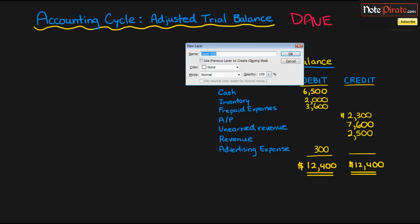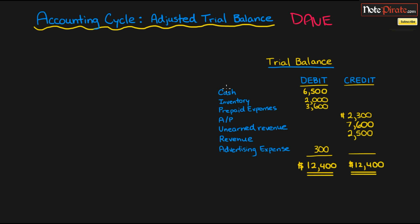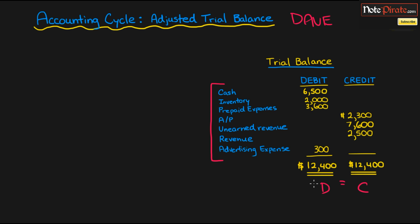So what is a trial balance again? Well, we have all of the accounts listed in our company — we have cash, inventory, prepaid expenses, accounts payable, unearned revenue, revenue, and advertising expenses. These are all the accounts that have balances in our company. And of course, the balances of our debits and credits are $12,400 each, so that our debits equal our credits. This is always a prerequisite and a requirement for any trial balance — the debits must equal the credits.